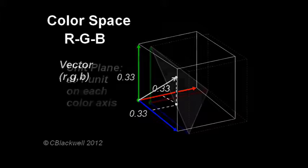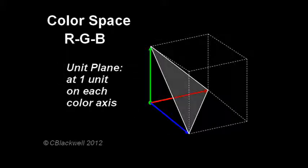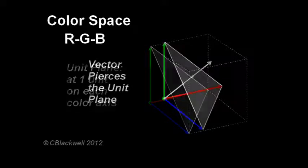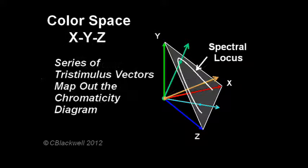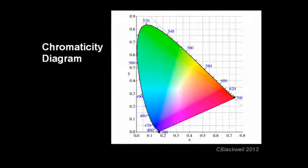You can create a unit plane that intersects the 1.0 unit mark on each of the color axes. Then, there is a specific location where each color vector pierces that unit plane. As you enter all the color matching values along the spectrum, you trace out a line called the spectrum locus. This line is the boundary that contains all the colors we can see. Here is the unit plane turned face-on, also known as the chromaticity diagram.